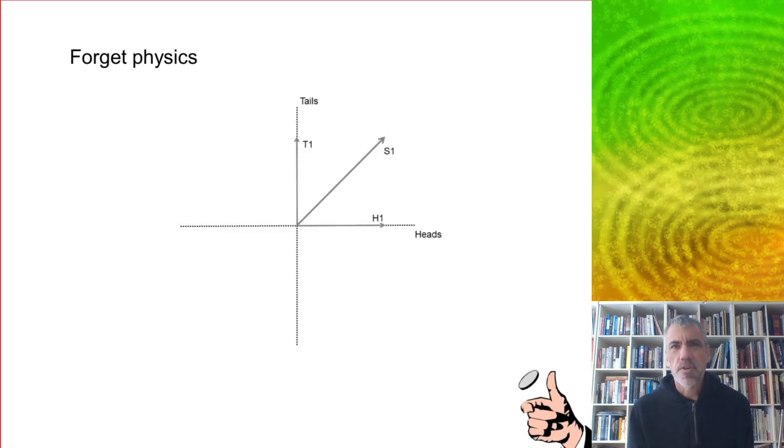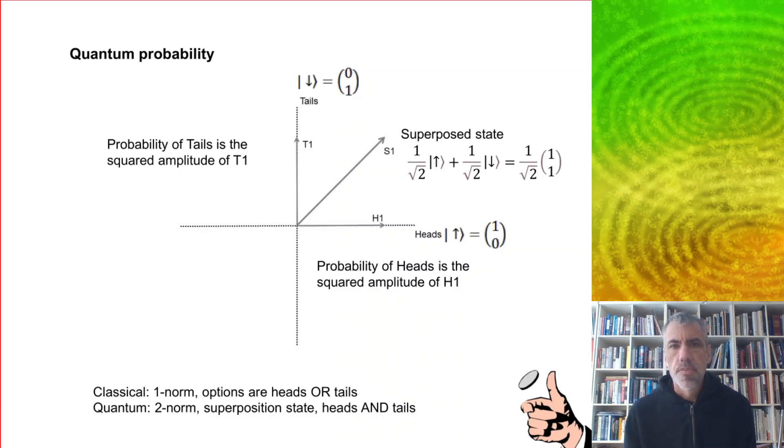But let's just forget physics for the time being and think of something much simpler, like a coin toss. So if we wanted to model the state of a coin toss where we don't know the outcome, there are two possible outcomes, heads or tails, so we would want a two-dimensional space. And we could represent the state of the coin if it was a balanced coin with a diagonal line like this one, and that sort of balance between the two states. And this is really the idea of quantum probability.